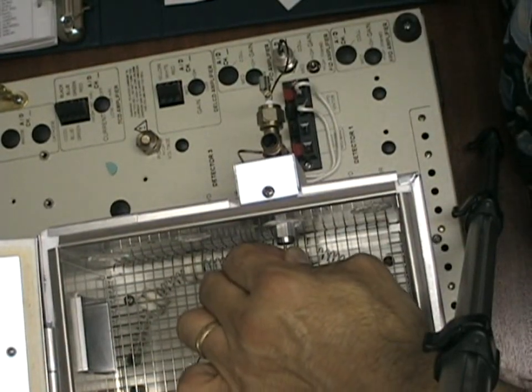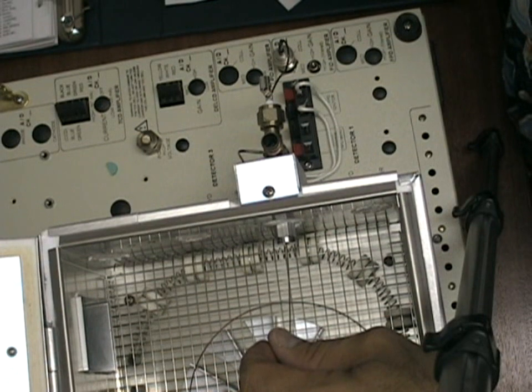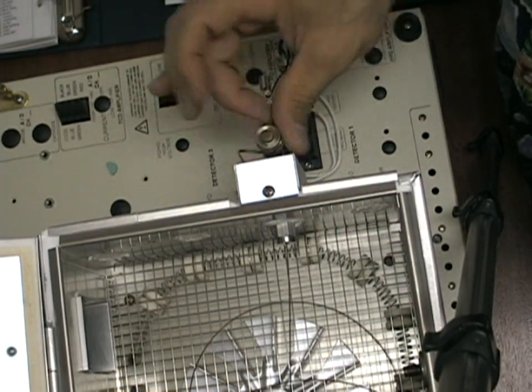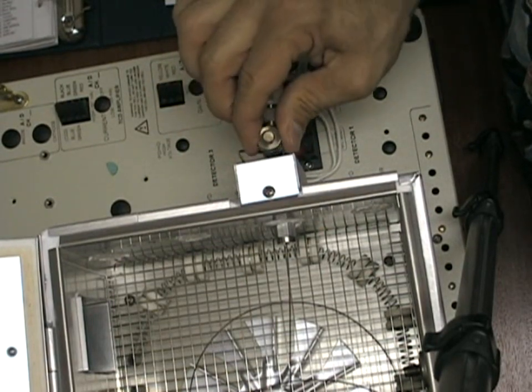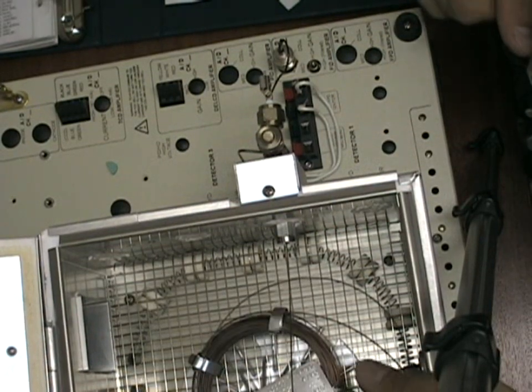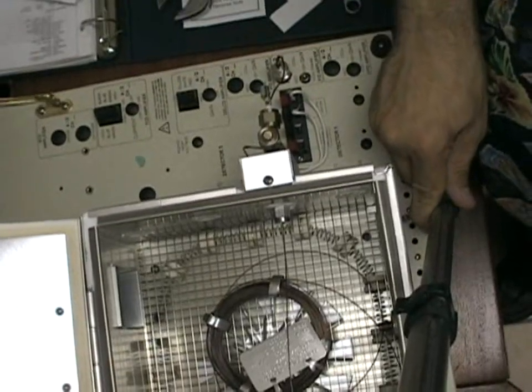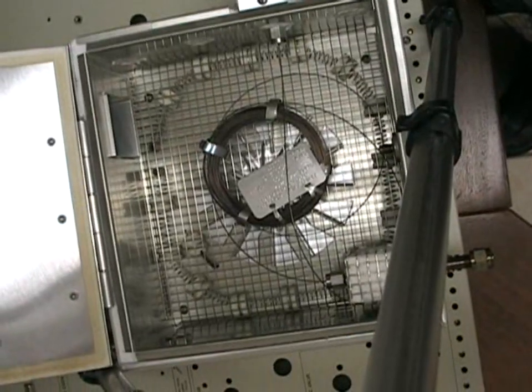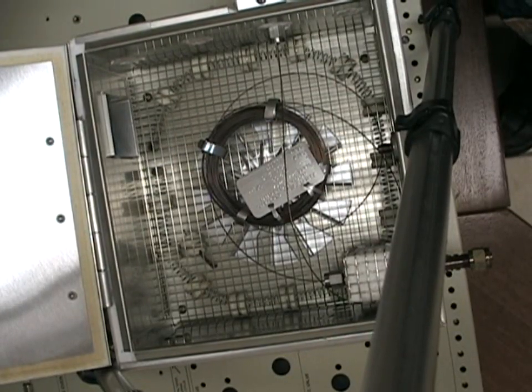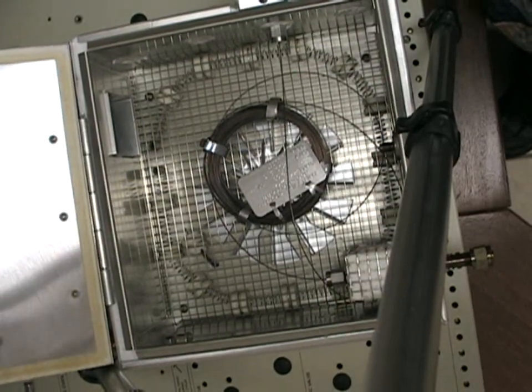Again, grab the end of the column and give a gentle tug to make sure it is secure. Replace the cap nut on the FID detector and just finger tighten that. Center the column in the oven and the GC is ready to begin operation. Just follow this procedure should you need to change columns or replace the existing column.